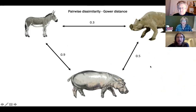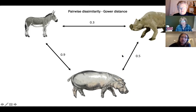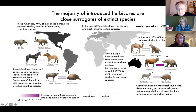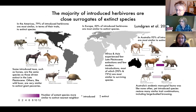We calculated the dissimilarity between each species and every other species in their continents, and we found, amazingly, that the majority of introduced herbivores are most similar to extinct species in their new homes. Wild donkeys share many traits with giant wombats. Wild horses in Australia share many traits with Zygomaturus trilobus, including hindgut fermentation, similar body mass, and similar diets. 93% of herbivores introduced in Australia are not most similar to extant native species, but are closely similar to species that went extinct — which is pretty remarkable.